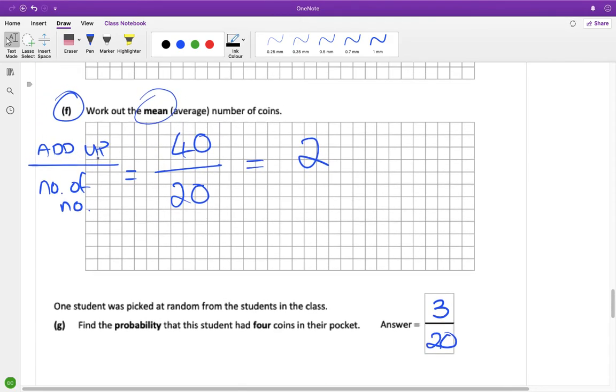So add up everything from the start, which added up to 40, and the number of numbers, which we did correctly, added from the start there was 20 numbers. 40 divided by 20 is 2.